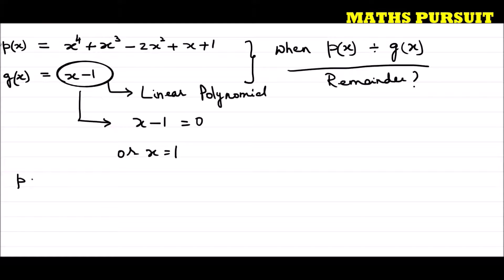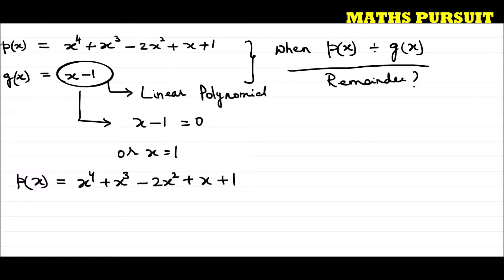Using the Remainder Theorem, we have p(x) equal to x to the power 4 plus x to the power 3 minus 2x to the power 2 plus x plus 1. As per the Remainder Theorem, when we divide a polynomial p(x) by a linear polynomial, the remainder will be p(a).